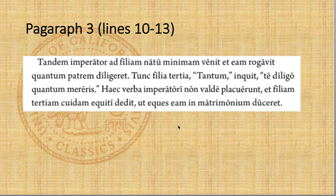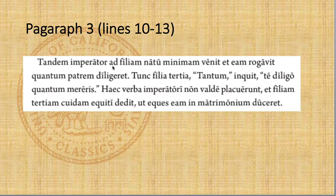Here's the beginning of Paragraph 3: 'Tandem imperator ad filiam natu minimam venit.' Minimum means smallest — it's a superlative going with filiam. So this is the youngest daughter. Tandem means finally, so: finally the emperor came to his youngest daughter and asked her how much she loved her father.